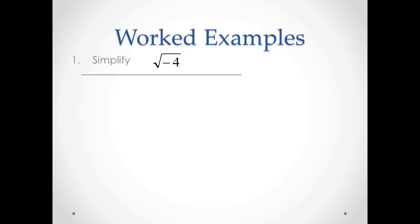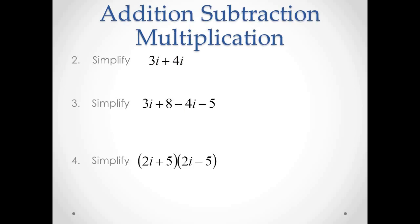For number 1, we need to simplify the square root of negative 4. Here, we can rewrite negative 4 as 4 times negative 1. Then, equivalently, 4 is 2 squared and negative 1 is i squared. Since both squares are inside the square root, in simplifying this, the squares will disappear if we try to put them out of the square root.